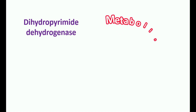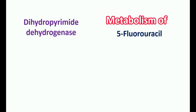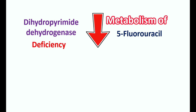Dihydropyrimidine dehydrogenase (DPD) is an important enzyme responsible for the metabolism of 5-fluorouracil — it is also responsible for the metabolism of uracil in the body. In people with a deficiency of this enzyme, the metabolism of 5-fluorouracil is reduced, resulting in increased levels of the medication in the body and potential toxicity. Therefore, in people with DPD deficiency, the dose of 5-fluorouracil should be reduced, and if any symptoms of systemic toxicity appear, the drug should be immediately discontinued.